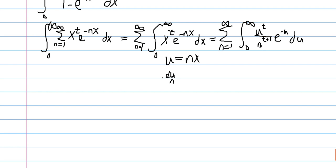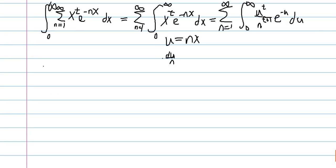And now, we can factor out the n to the t plus 1. And so we get the sum, 1 over n to the t plus 1, times, and then once we factor that out, we have u to the t times e to the negative u, which is gamma of t plus 1.